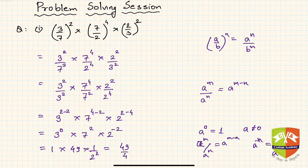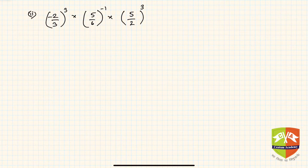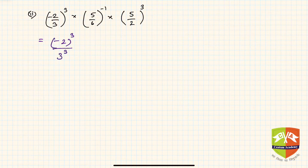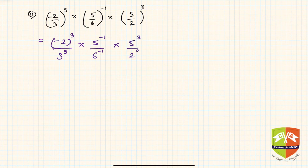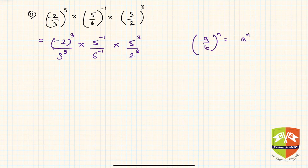Next, the second question. This question is similar but some exponents are negative and the bases are also negative. I'll open the brackets: (-2/3)³ × (5⁻¹ / 6⁻¹) × (5/2)³. The law I'm using is (a/b)ⁿ = aⁿ / bⁿ.